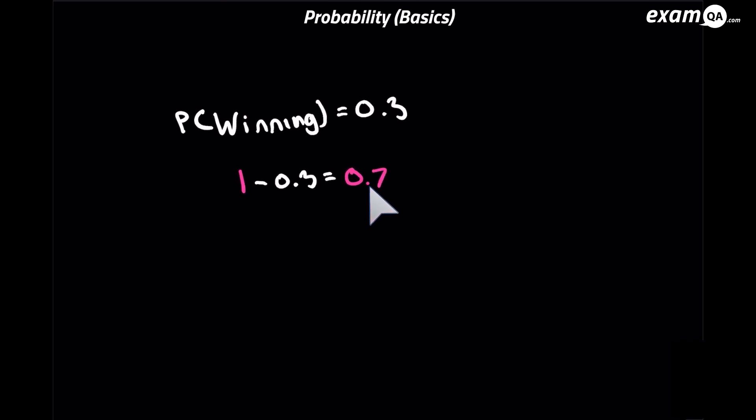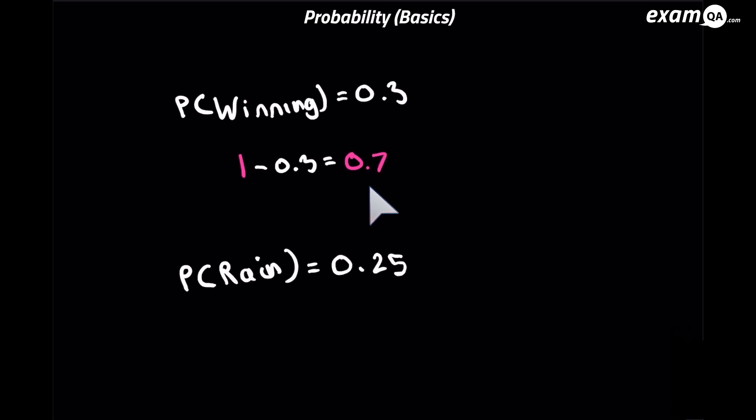Okay, so let's look at one more similar example. So here I've got the probability of it raining is 0.25. Now from this probability you should be able to say what is the probability of it not raining.